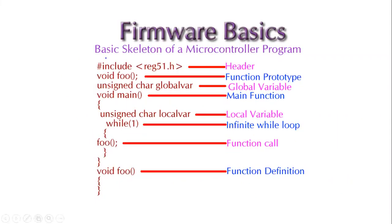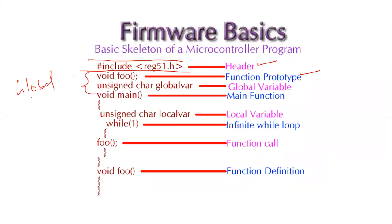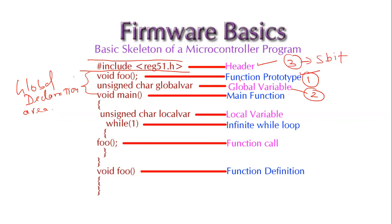Now let us move on to firmware basics. This is the basic 8051 program structure. It includes a header file — #include register51.h — followed by the global declaration area, which is used for three purposes: declaring function prototypes, declaring global variables, and declaring SBIT variables. The global declaration area spans from the header file to the start of the main function.